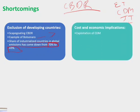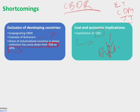The second shortcoming is cost and economic implications — exploitation of CDM. CDM has been exploited a lot. Many countries invested a little and received a lot of profit. There are many examples where CDM became a business for profit-making. What happened is that the Kyoto Protocol saw a shift towards CDM, and Western political interest drove extensive investments in China and India, with a cumulative share of 80% of CDM projects. This was very problematic.